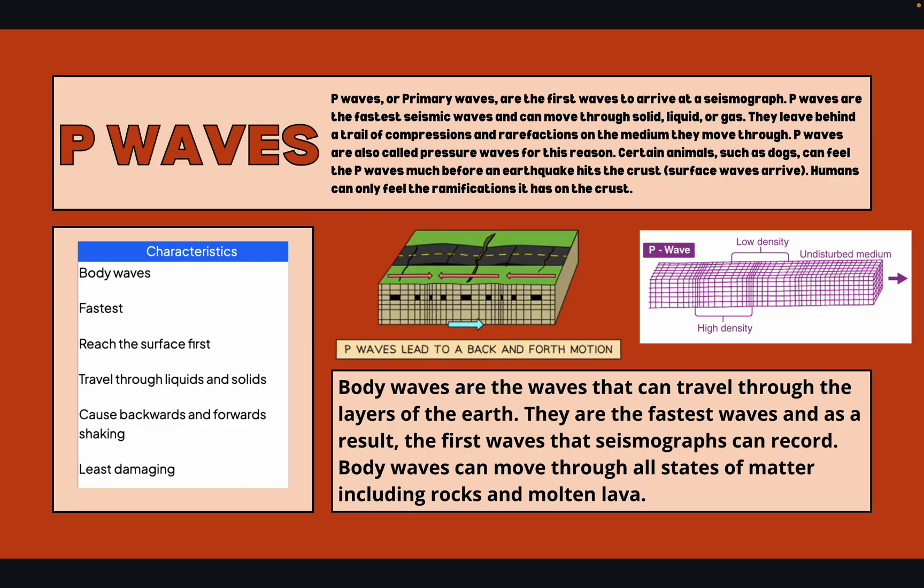Body waves are waves that can travel through the layers of the Earth. They are the fastest waves, and as a result, the first waves that seismographs can record. Body waves can move through all states of matter, including rocks and molten lava.